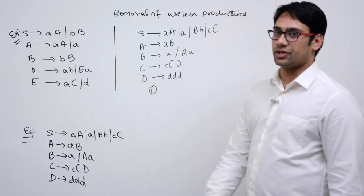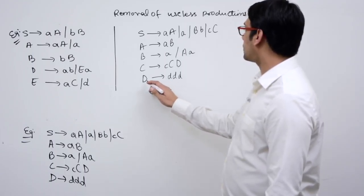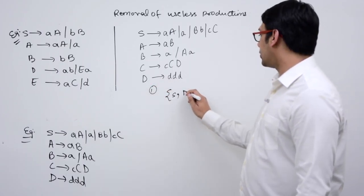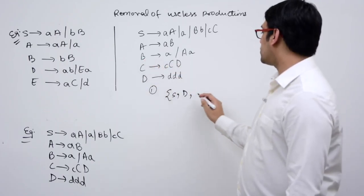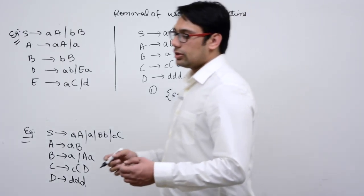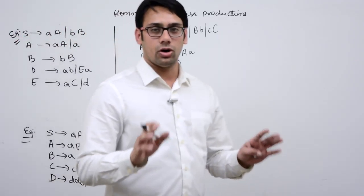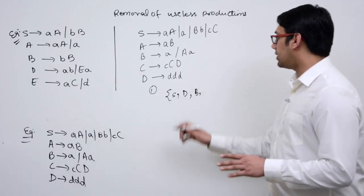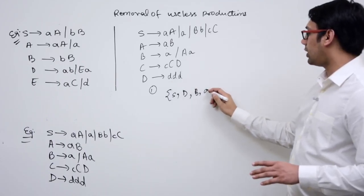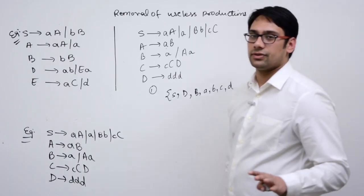The useful productions are those which directly generate a terminal. The start symbol is always useful. D is directly generating a terminal, so D is a useful production. B is generating a terminal, so B is a useful production. All terminals are always useful — here we have terminals: small a, b, small c, and small d.